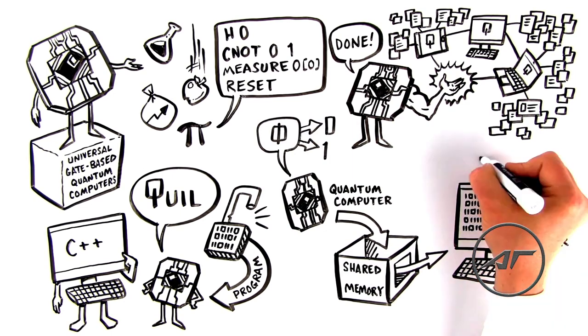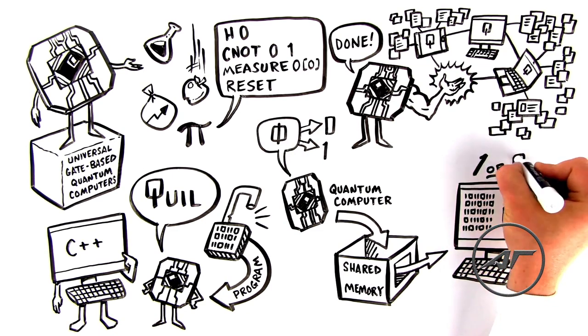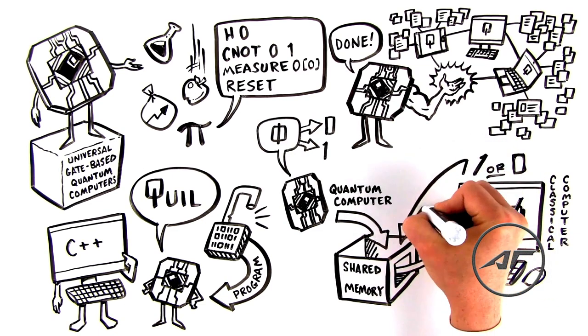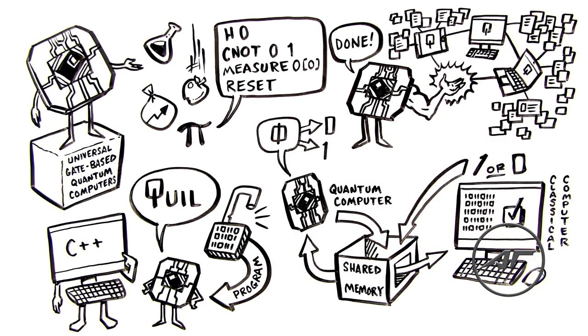When the classical computer has finished a calculation, it can put a zero or one back into shared memory, which the quantum computer can use. This interplay is called hybrid classical quantum computation.